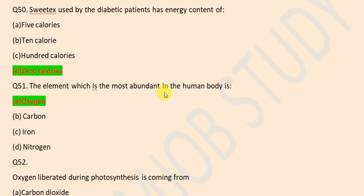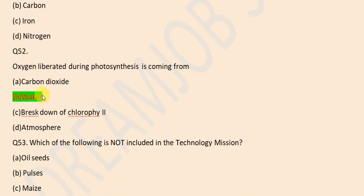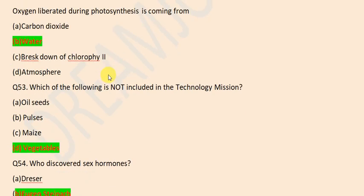The element which is most abundant in human body is oxygen. Oxygen liberated during photosynthesis is coming from water. Which of the following is not included in the technology mission? Vegetables.